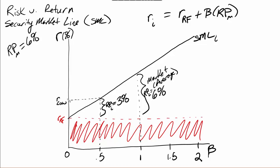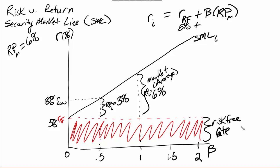A beta of 0.5 is a low-risk stock because it has a required return below the market and a beta lower than one. With a risk-free rate of five percent, that low-risk stock has a required return of eight percent — five percent risk-free rate plus three percent risk premium. Following across from the market, the average or market stock return is five percent plus six percent, which equals eleven percent.